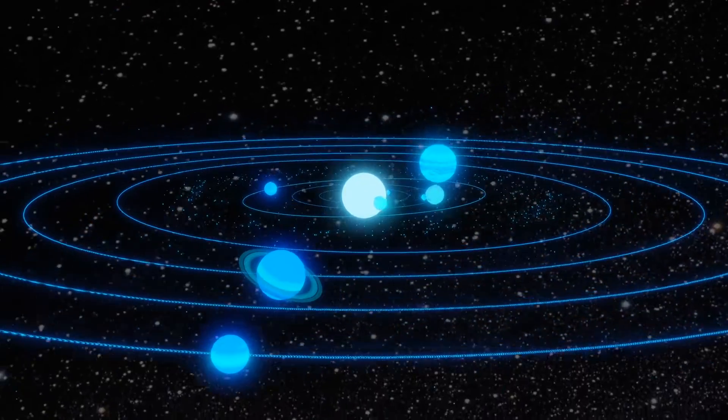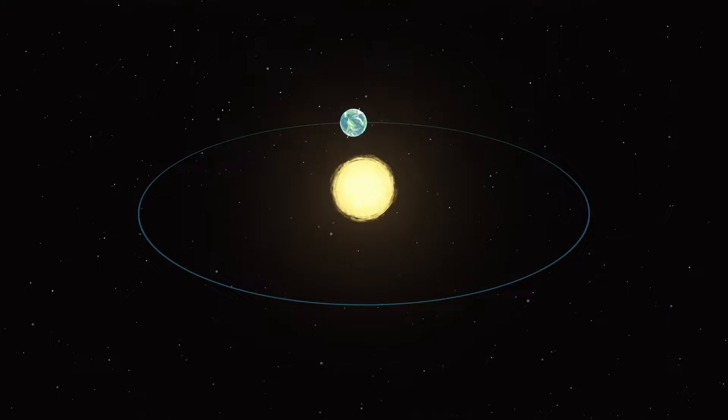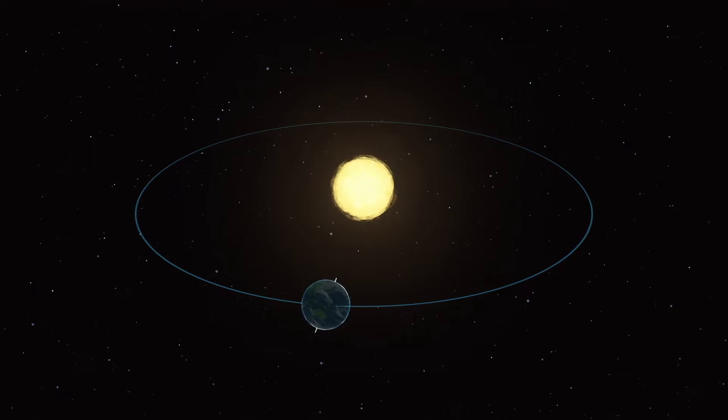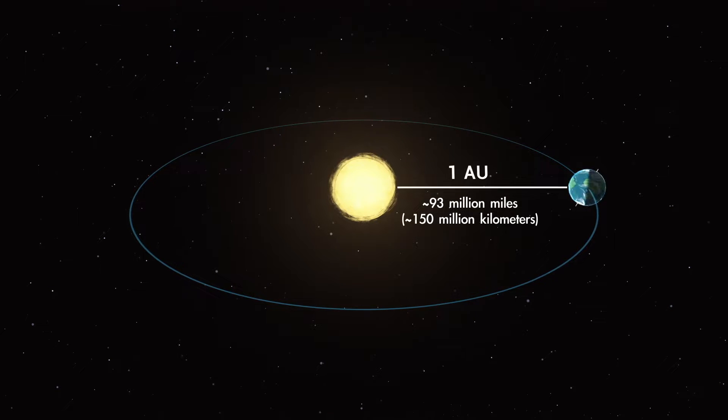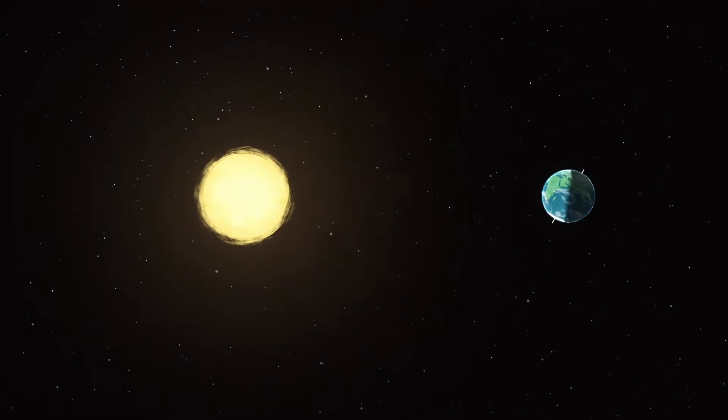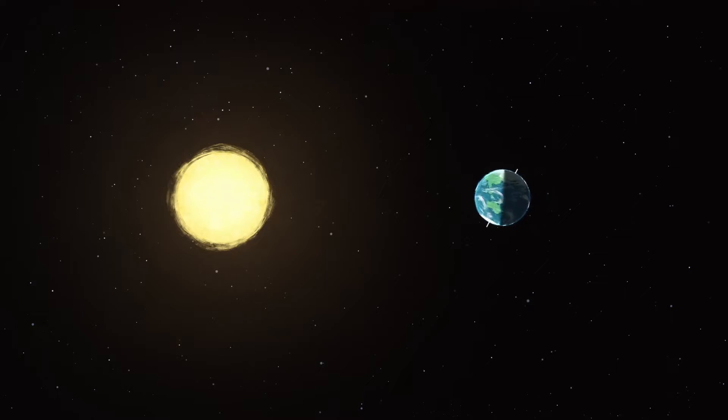We measure distances to planets in astronomical units. One AU is the average distance from the Earth to the Sun, about 150 million kilometers. All the planets orbit the Sun in ellipses. Since the distances are not constant, we take the average.